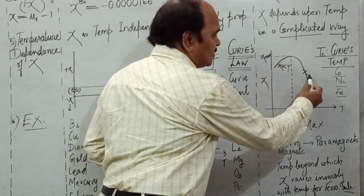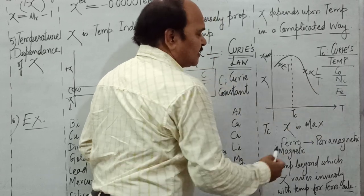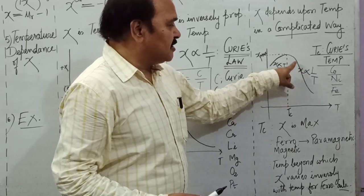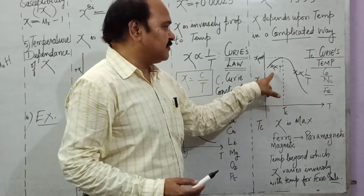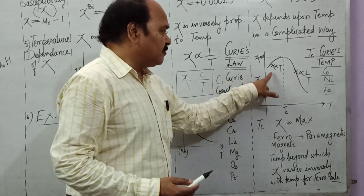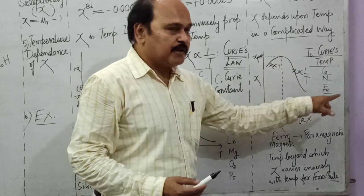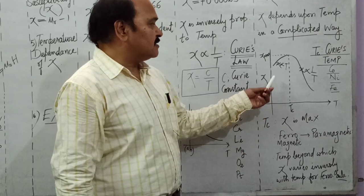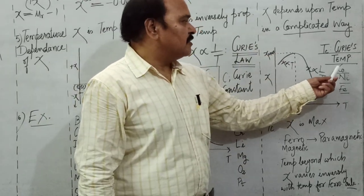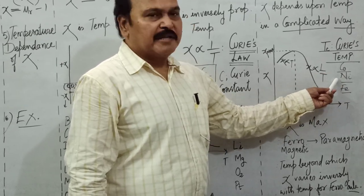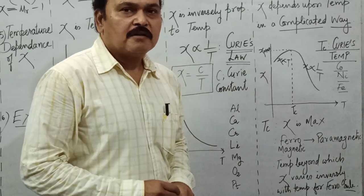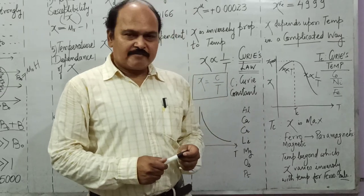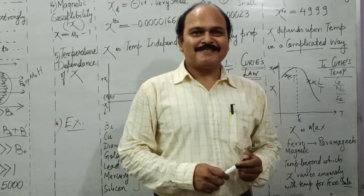Curie's temperature can also be defined as the temperature beyond which a ferromagnetic substance starts behaving like a paramagnetic substance. Beyond Curie's temperature, χ decreases with rising temperature — that is paramagnetic behavior. Examples of ferromagnetic substances besides iron include nickel, cobalt, soft iron, and alloys made from these metals. This brings us to the end of today's class.